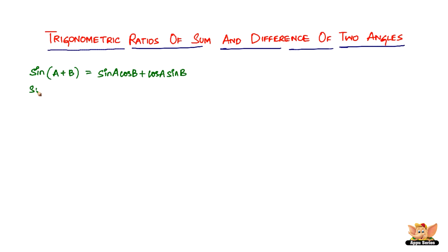The next one is sine of A minus B. Sine of A minus B is sine A cos B minus cos A sine B. Pretty simple, not very complicated. The difference is just the change of the sign.